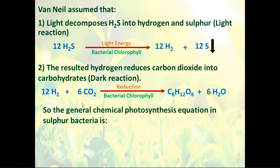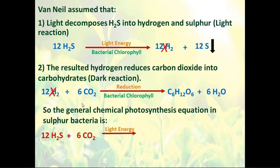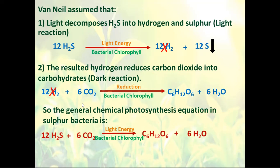The general chemical photosynthesis equation in sulfur bacteria combines these two equations together. So we start with 12 hydrogen sulfide and six carbon dioxide. We need light and bacterial chlorophyll. The result is one molecule of glucose plus six water, and don't forget the precipitated sulfur. In this case, we didn't have any evolved oxygen.